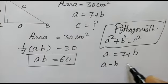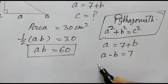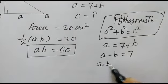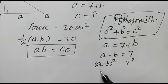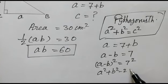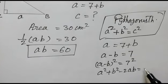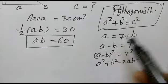On squaring both sides, a minus b whole square is equal to 7 square, so a square plus b square minus 2ab is equal to 49.